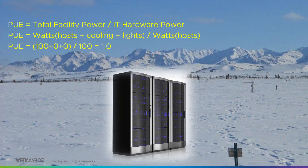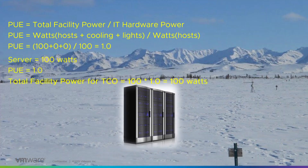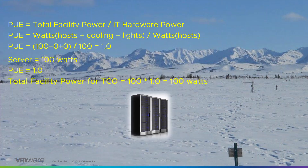Looking at our example, we now have 100 plus 0 plus 0 divided by 100, which gives us a PUE factor of 1.0 — which, by the way, is the lowest a PUE factor can be. So if we know our server takes 100 watts and our PUE factor is 1, then we can calculate our total facility power for our TCO at 100 watts. And that is how we do PUE.